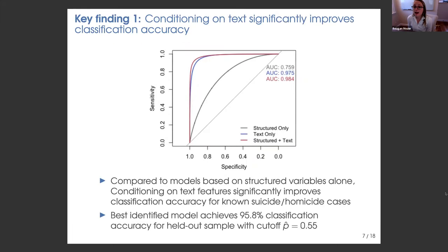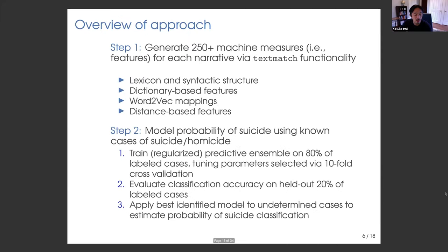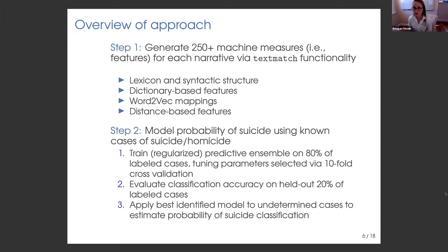A quick question was raised about whether the approach cares about interpretation — what constitutes a suicide or what's predictive of it. In the full paper we do go into that: once we built the model, we look at what makes something high probability of suicide and how that can potentially update the protocol for classifying suicide. There was also a question about whether we code inconsistencies in how states define suicide. We have state labels for each case and are looking into quantifying adherence to protocol as future work, but that's not used in the current analysis.